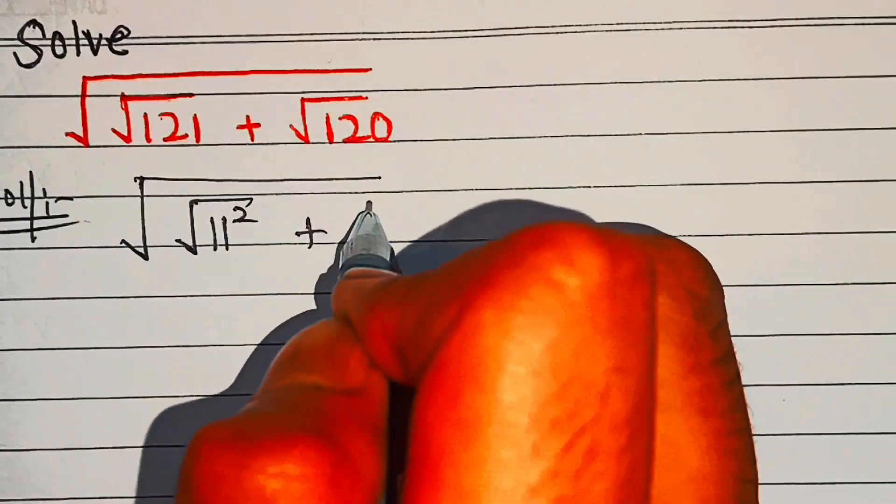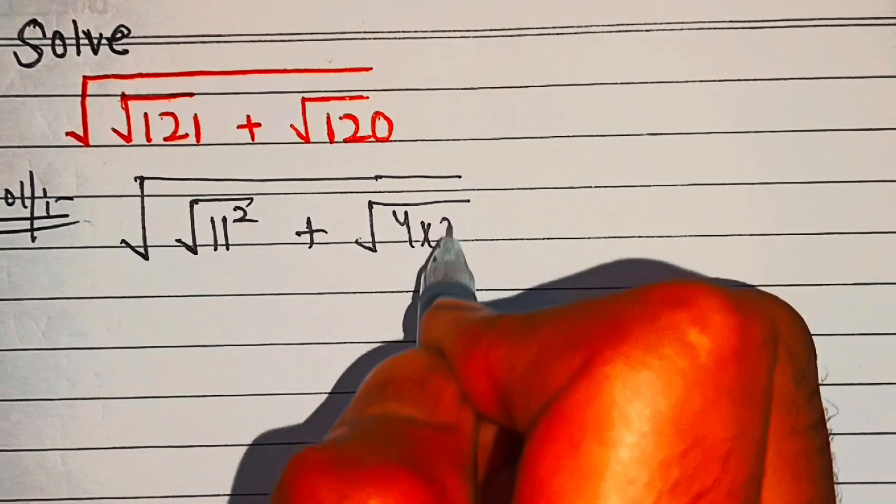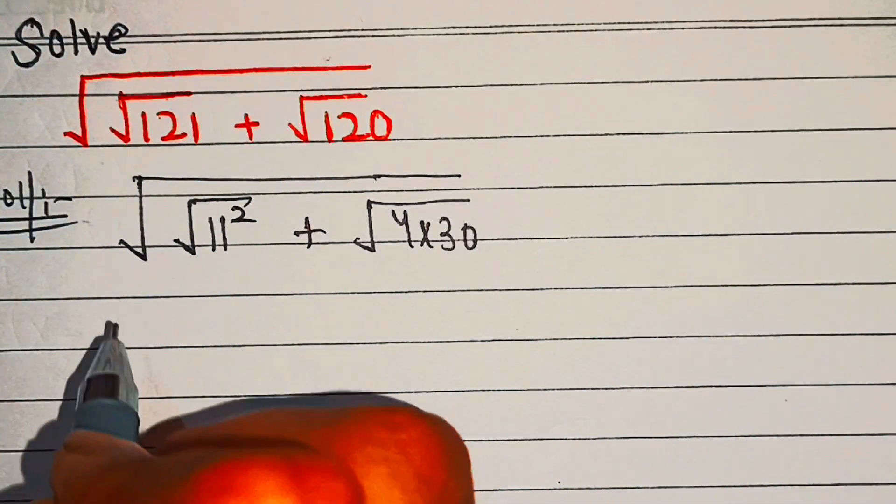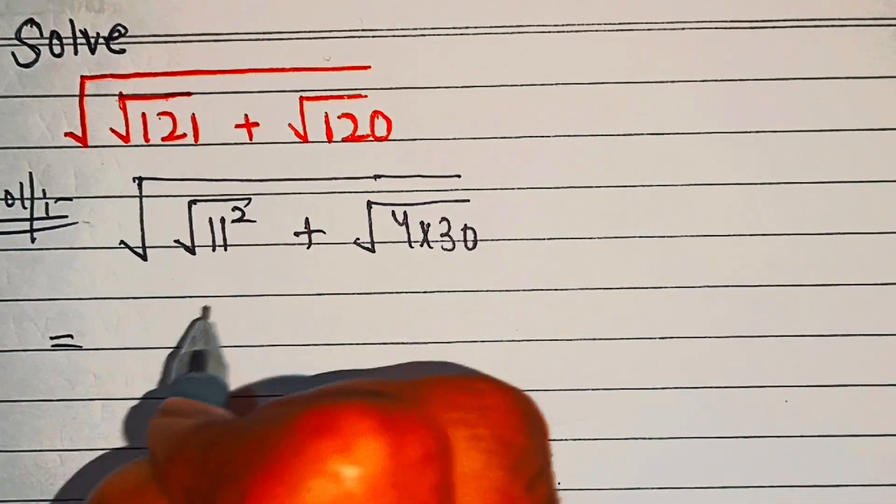is square of 11. Now we'll factorize 120, so we'll write this as 4 into 30. This equals...